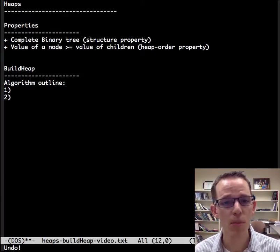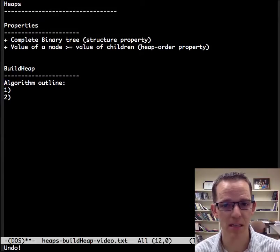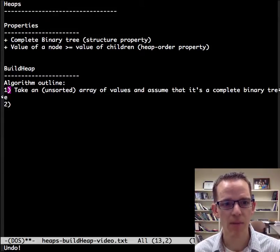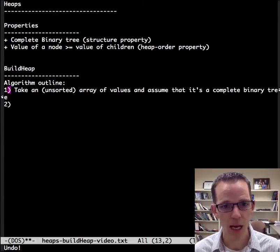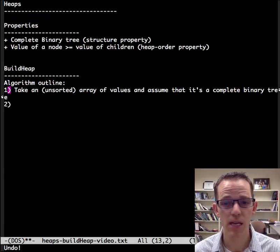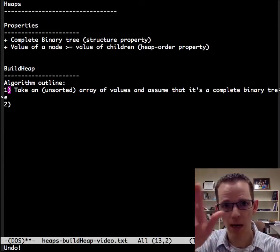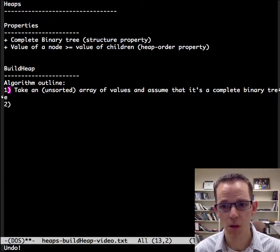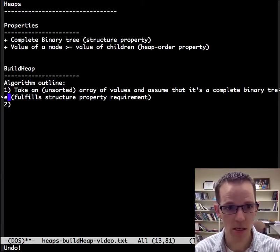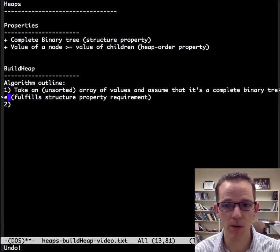The algorithm has two major steps, and that's it. You're going to love this. First we take an unsorted array of values and assume that it's a complete binary tree. You're now a complete binary tree. Well that's great, because then it fulfills the structure property requirement.